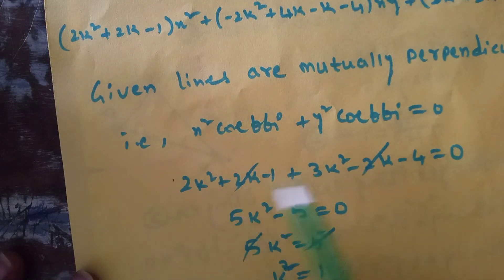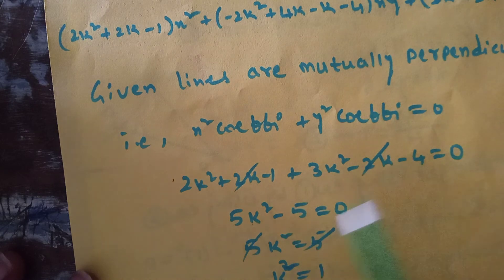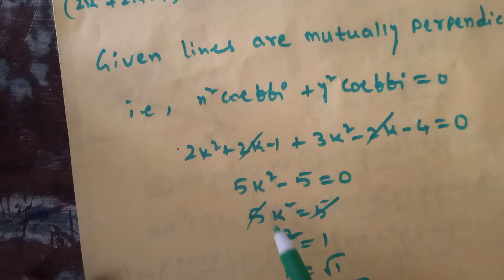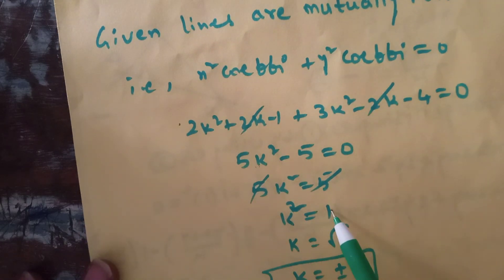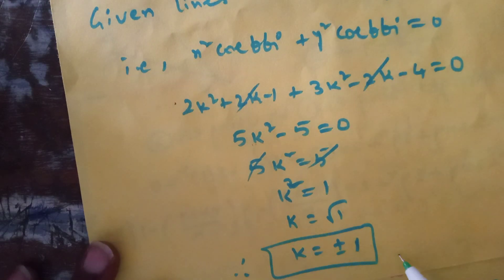So 2k² + 3k² = 5k², and -1 - 4 = -5, giving us 5k² - 5 = 0. Then 5k² = 5, so k² = 1, therefore k = ±1. The required value of k is ±1.